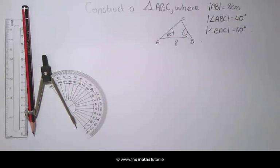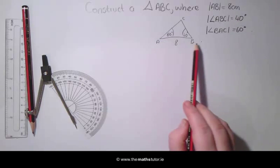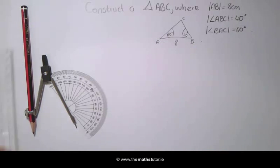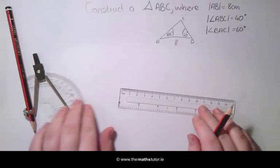We will start the construction by drawing our horizontal line AB which is 8 cm.